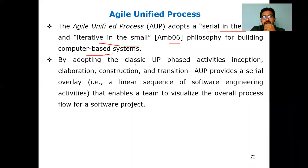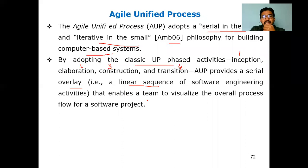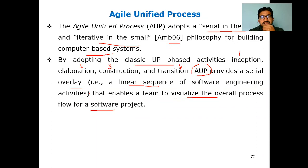By adopting the classical UP — which consists of four phases: inception, elaboration, construction, and transition — the Agile Unified Process provides a serial overlay. Serial means a linear sequence of software engineering activities that enables a team to visualize the overall process flow for a software project. It also supports iterative development, since agile itself emphasizes frequent changes.